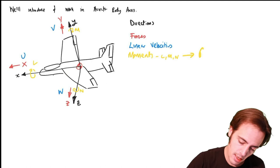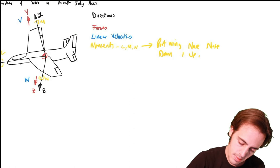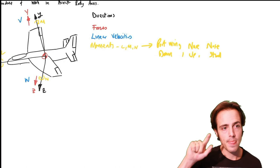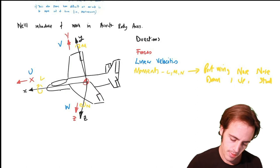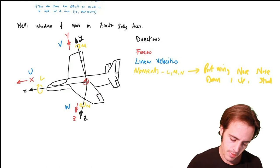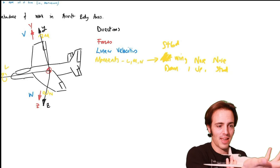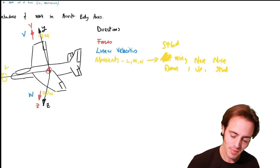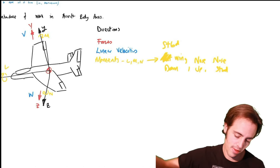The direction of positive moments in each axis: for roll it's starboard wing down, for pitch it's nose up, and for yaw it's nose starboard. To check this: thumb pointing forward along X, fingertips curl — that's starboard wing down for roll. Thumb across the Y-axis — nose up for pitch. Thumb down along Z — nose going starboard for yaw. If you're confused about port and starboard, starboard has two R's in it.